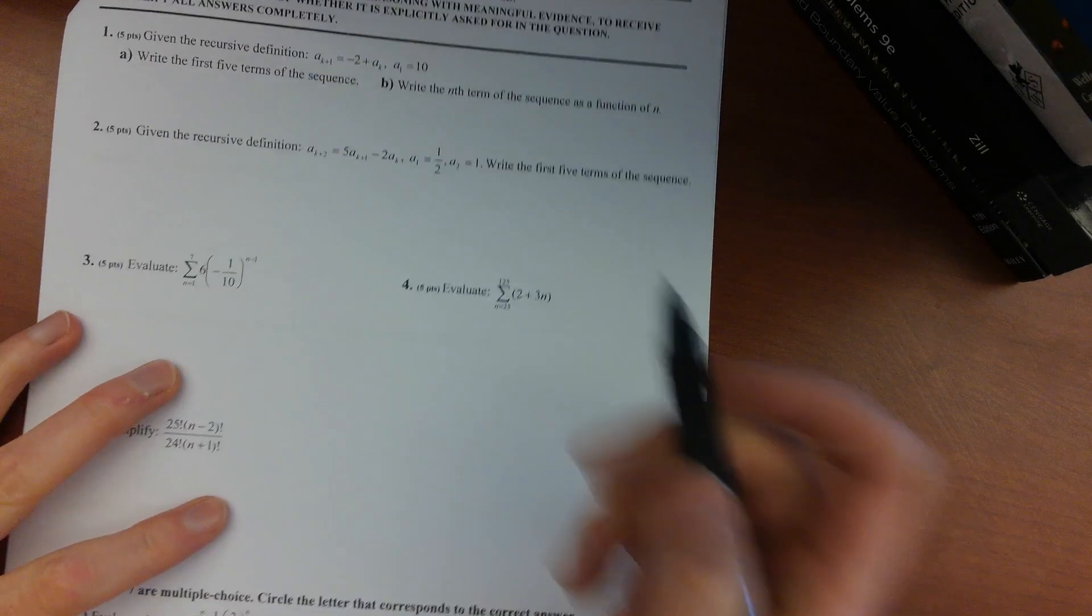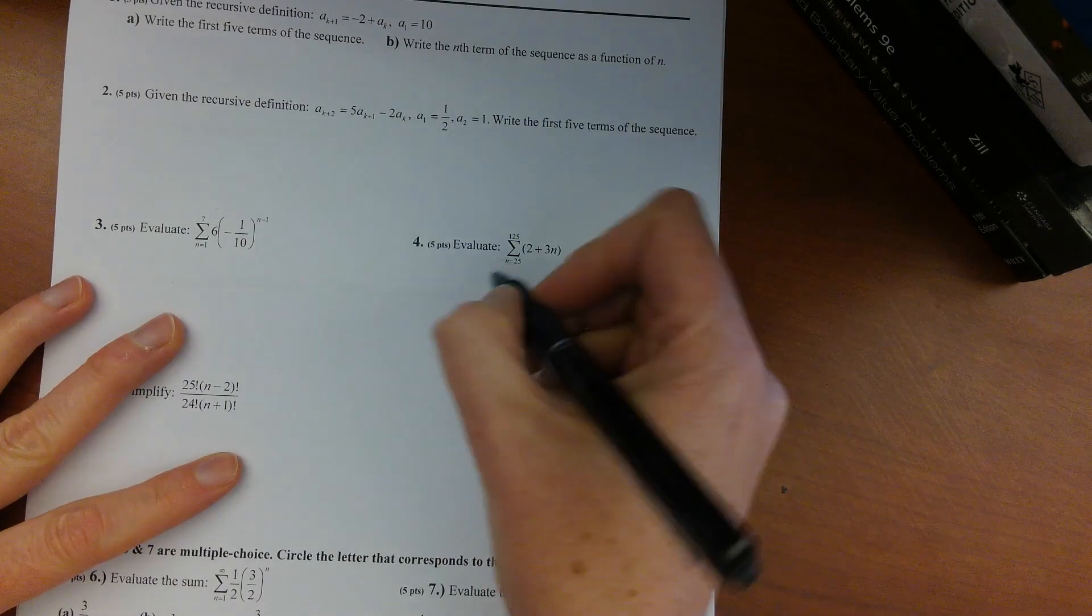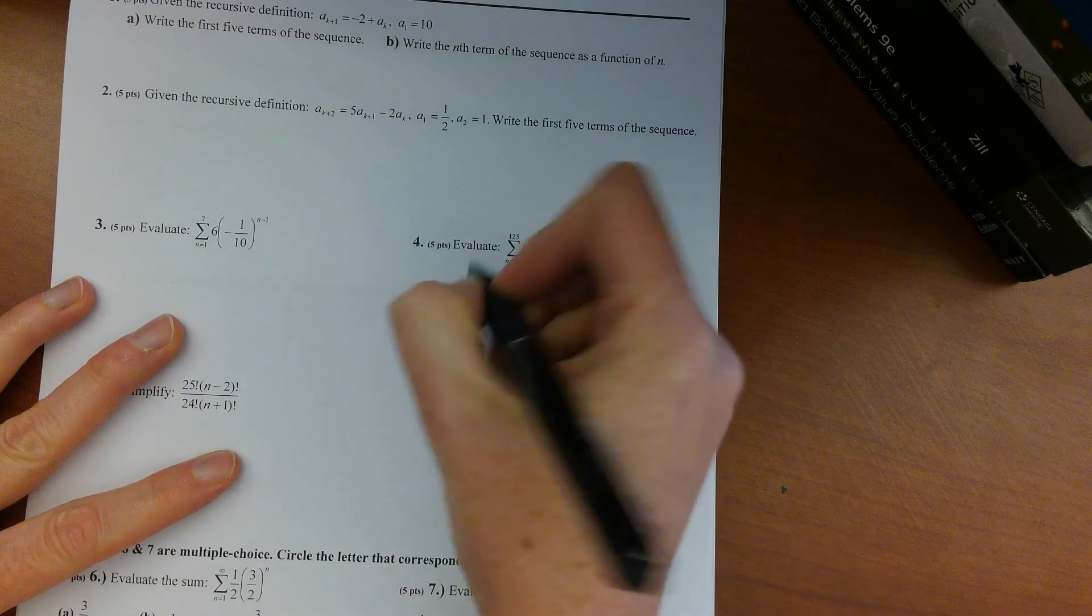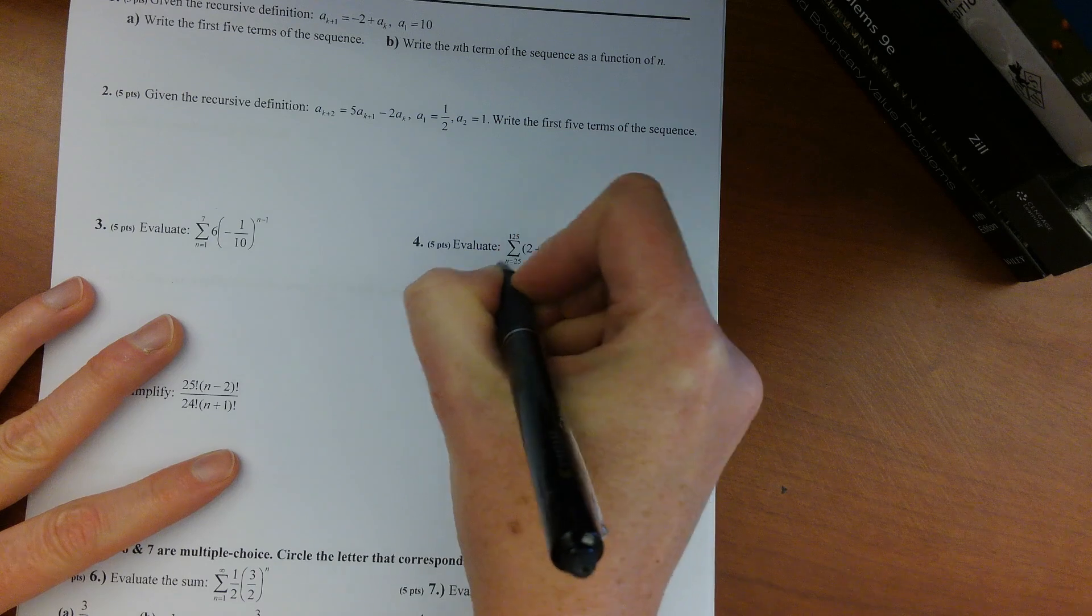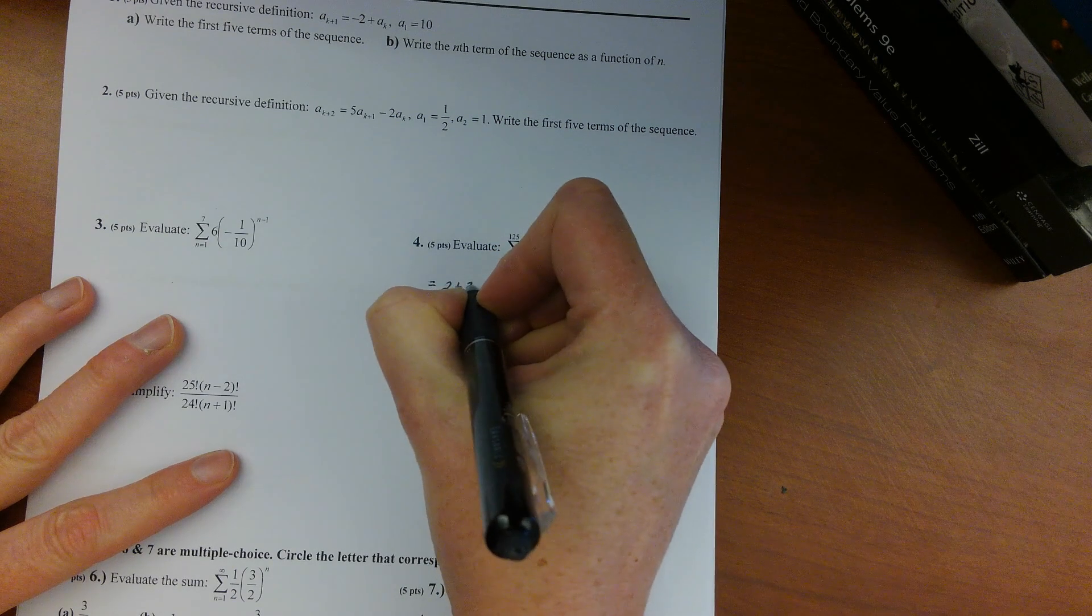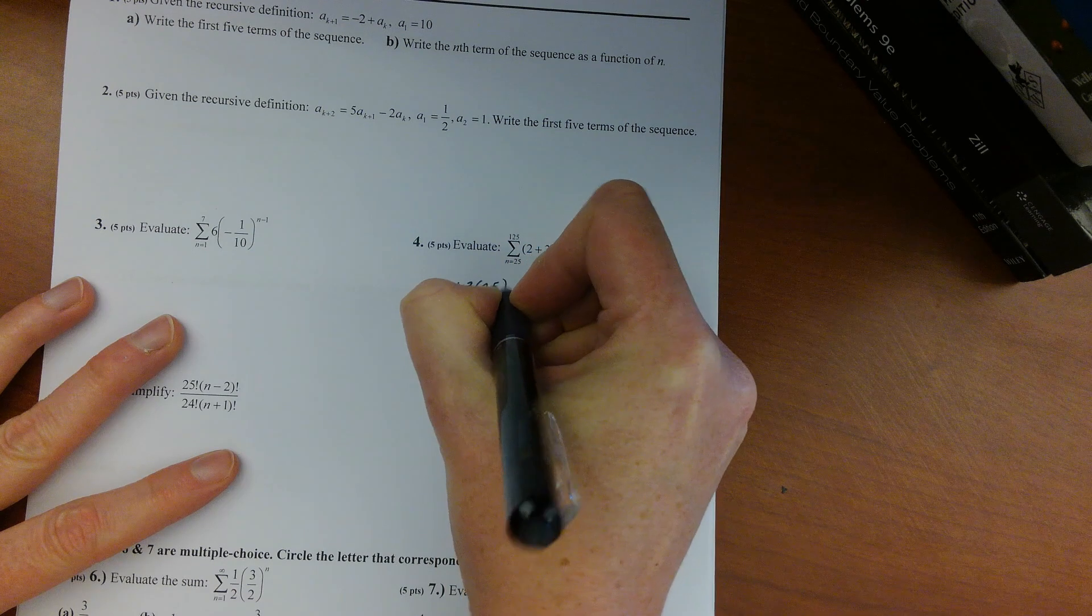Alright, let's look at problem 4 here. If you were to start expanding it out, it wouldn't especially be necessary for the problem, but putting 25 in for n would give you 2 plus 3 times 25.